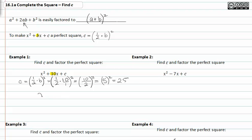So we can rewrite our trinomial with c now as an actual value. This factors nicely since it's a perfect square trinomial to x plus five, quantity squared.